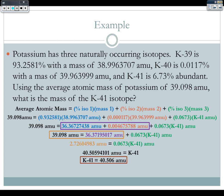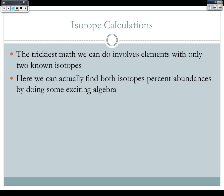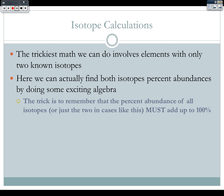You can solve for anything — you just have to keep like terms together and keep track of everything. It's kind of like the specific heat equation in that the numbers get big, but it's just multiplication, division, and addition. It can be a little tricky. The trickiest math with isotope calculations involves elements with only two known isotopes. Here, we can actually find the percent abundance of both isotopes using algebra. We just have to remember that the percent abundances of all isotopes must add up to 100%.